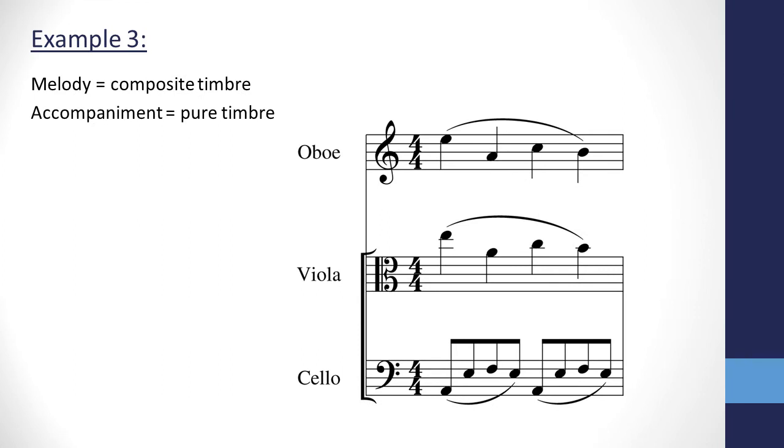Here we have the cello playing the accompaniment while the oboe doubles the viola in unison on the melody. This adds color and slightly reinforces the melody, but at the same time makes the pure timbre of the cello stand out in contrast.